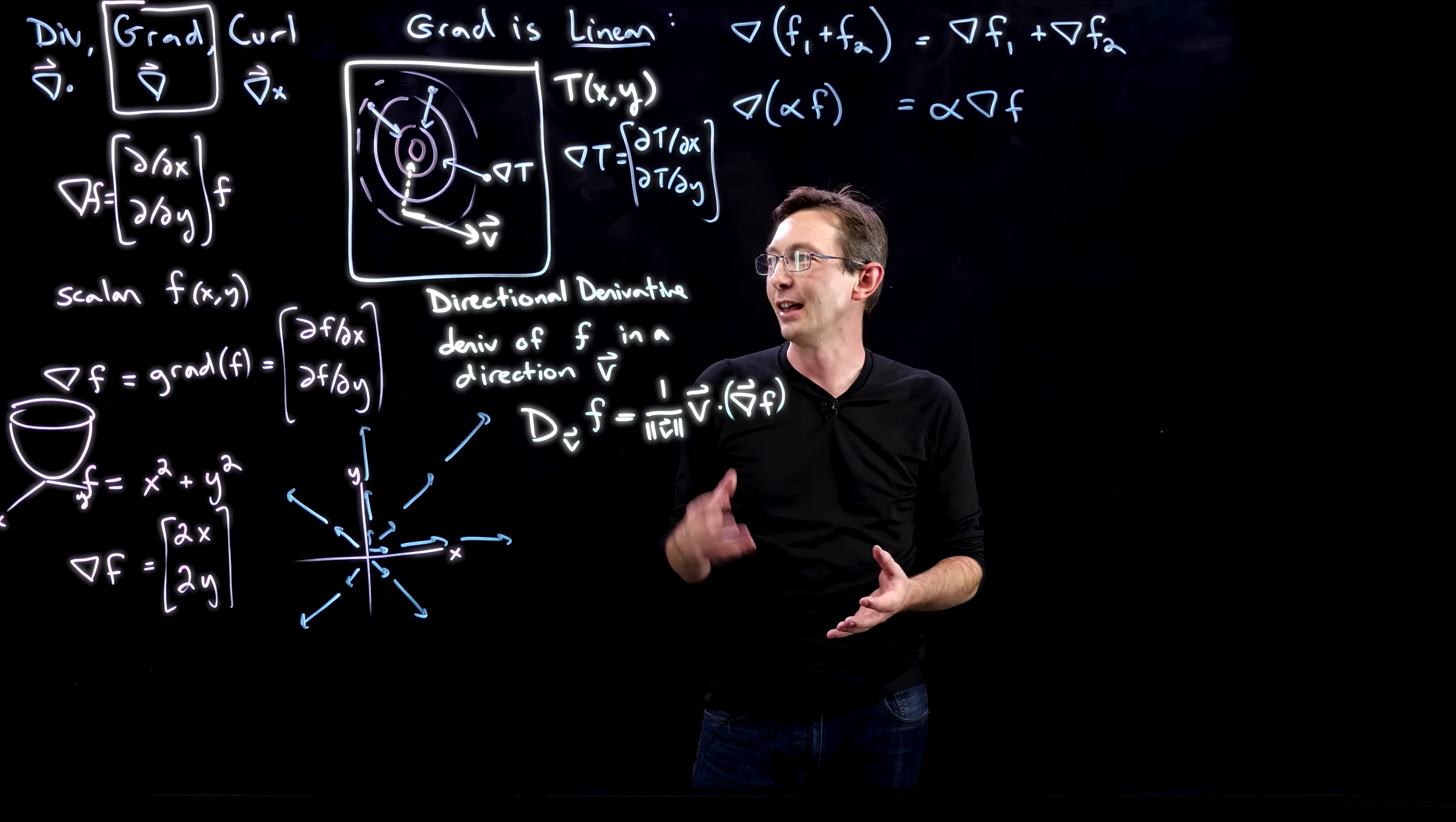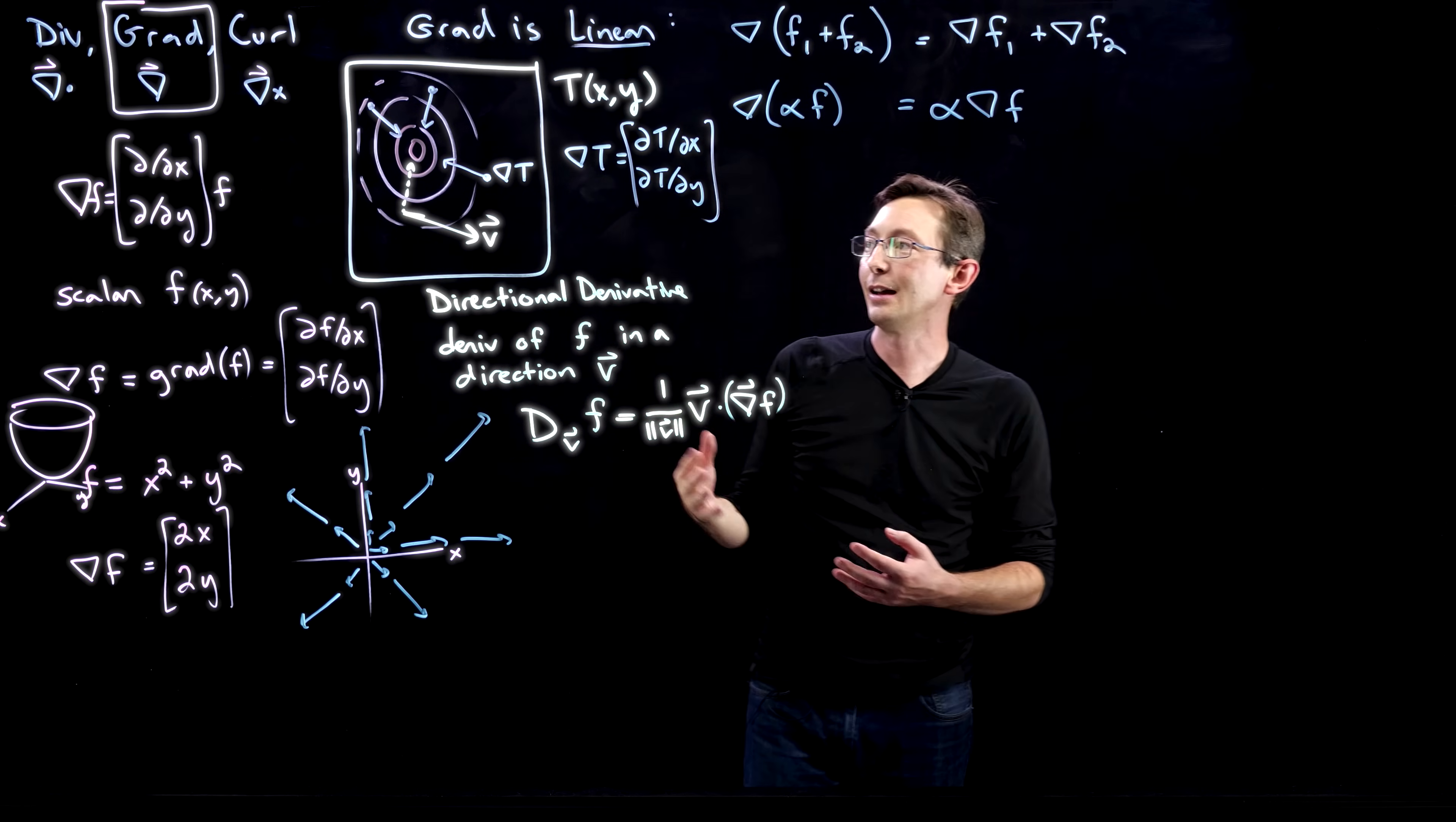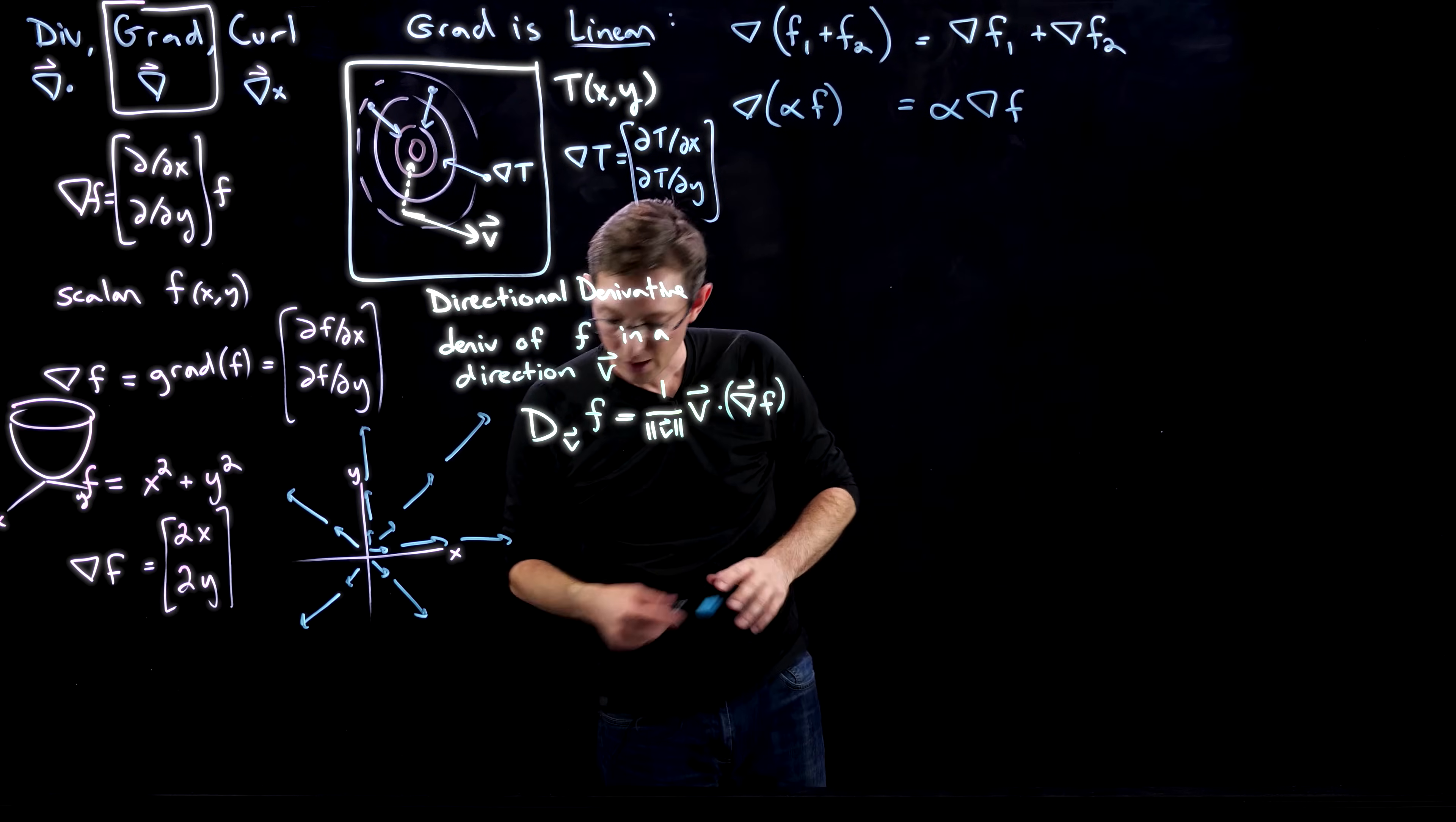One more example. I want to really drive home how much I love the gradient, how useful it is. I feel like when I'm learning math, I like to see it a lot of different ways because maybe one of them clicks. The gradient allows me to compute the rate of change of a scalar field in the x and y directions. It allows me to compute directions of fastest rate of change. It also allows me to take the derivative in any old direction.